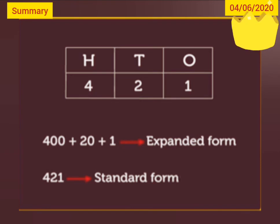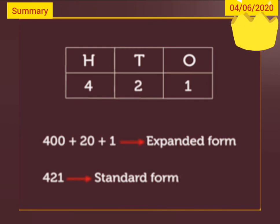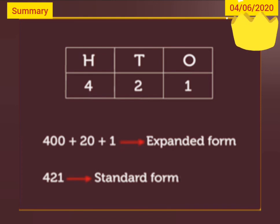Dear children, let us do a quick summarization of what we have learned today. We have learned that when the number is in its expanded form, we can write it in the standard form by placing the digits in the respective columns of the place value chart. Here, 400 plus 20 plus 1 is called the expanded form, and the number 421 is called the standard form.